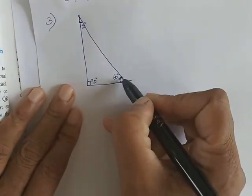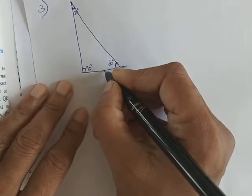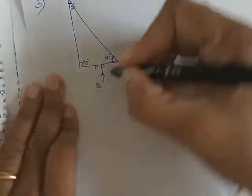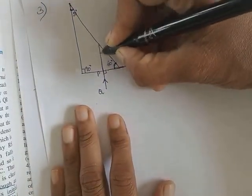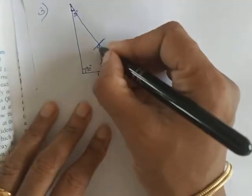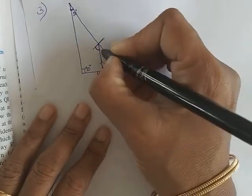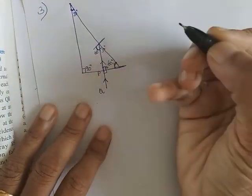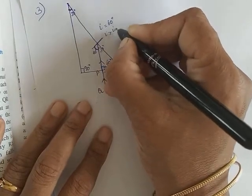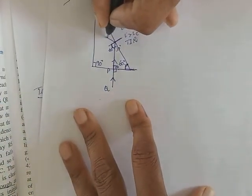Let's take an incident ray PQ coming in with normal incidence, so the ray goes straight through. Draw a normal at the point where it hits the next surface. Using the triangle angles — 90°, 60°, so this angle is 30°, making the angle of incidence 60°. Since 60° is greater than the critical angle ic, total internal reflection takes place.